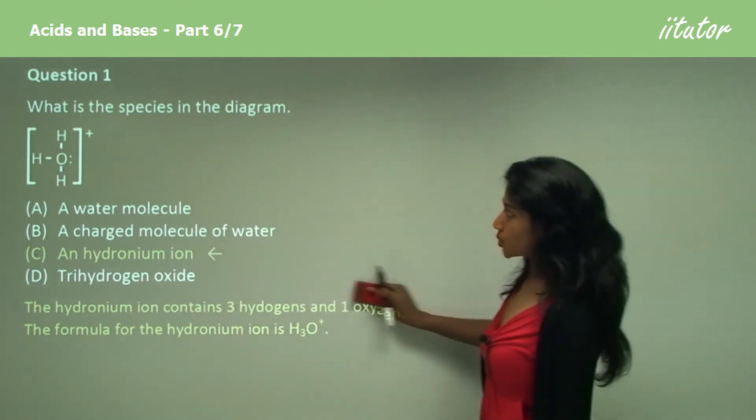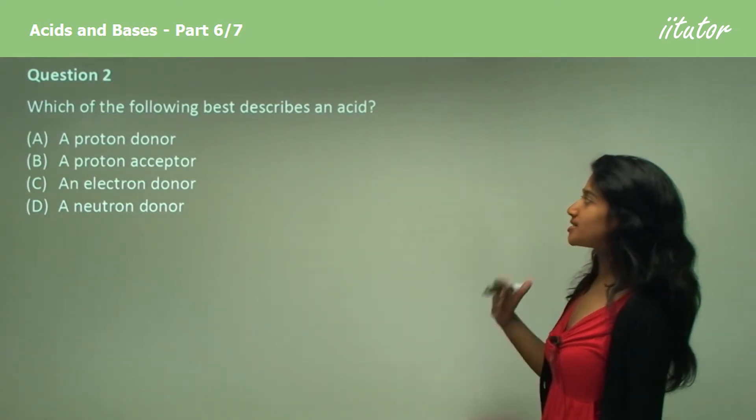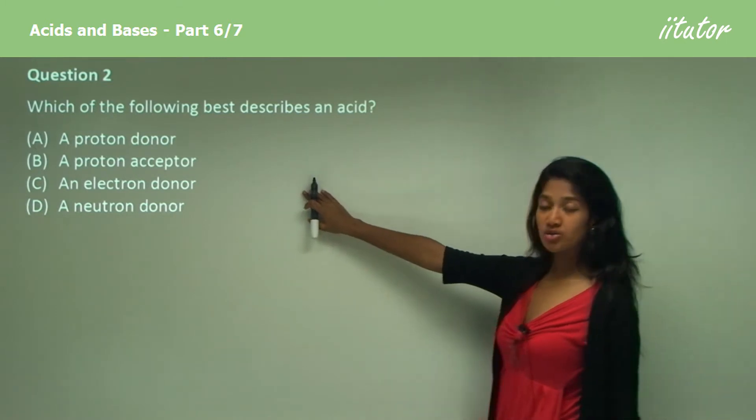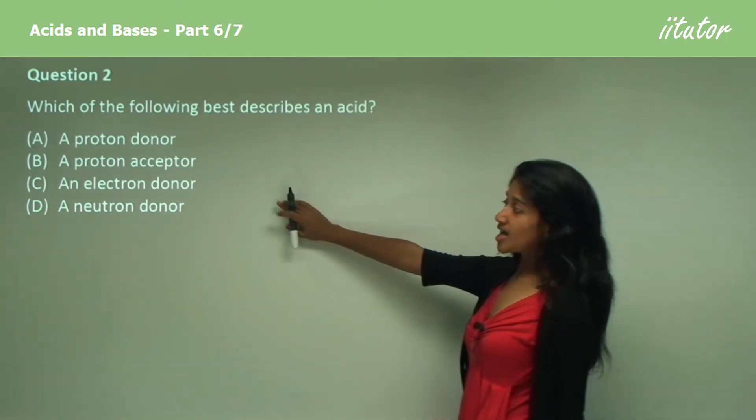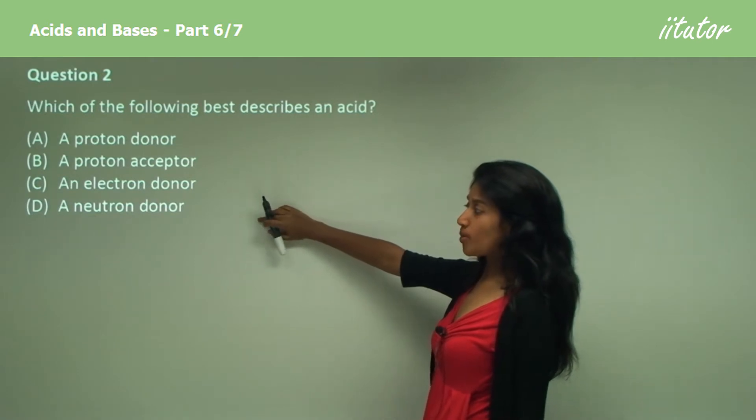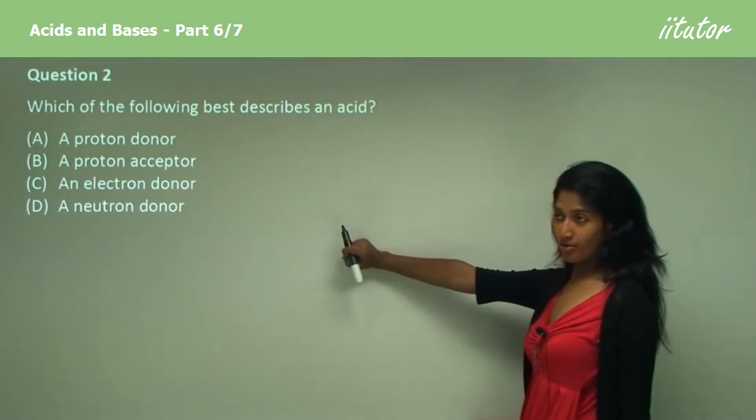Moving on to question two, which of the following best describes an acid? Is it option B, a proton acceptor? Option C, an electron donor? Or option D, a neutron donor? Or option A, a proton donor?